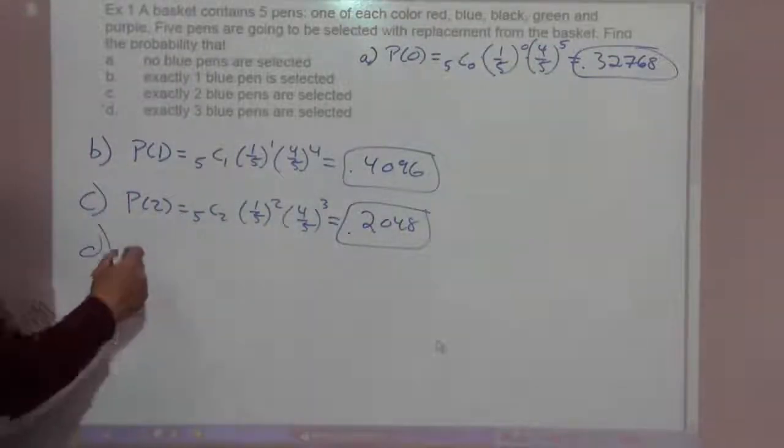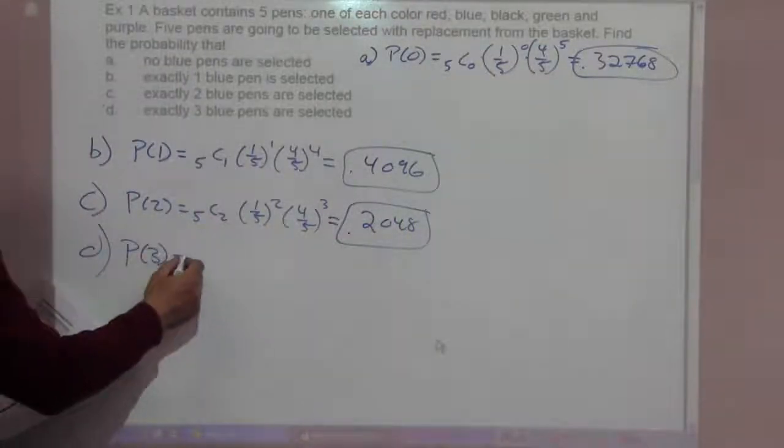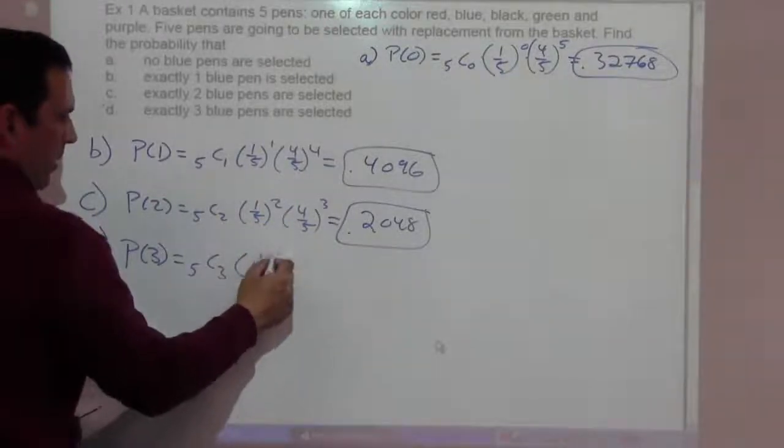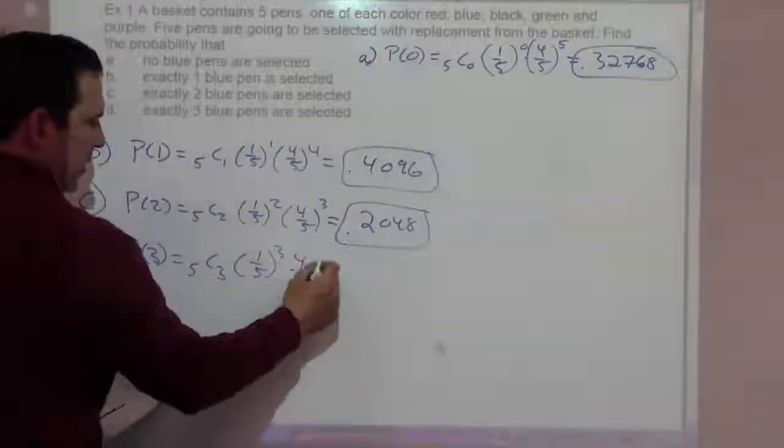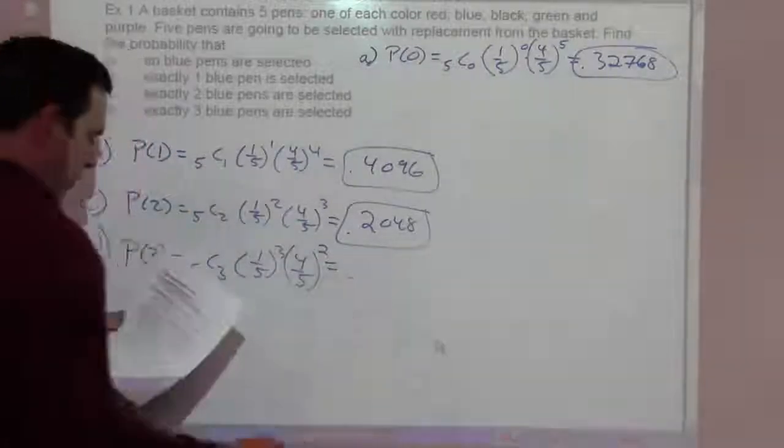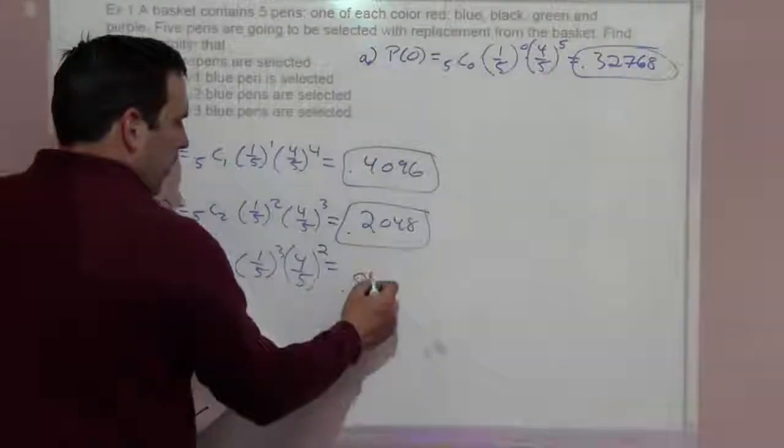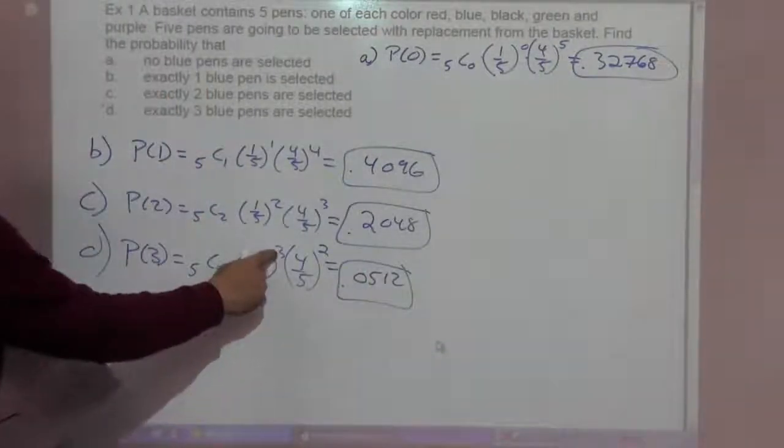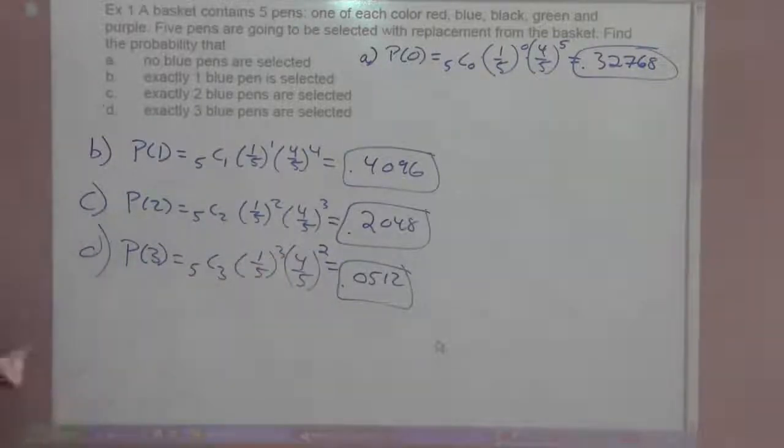And part D, the probability of getting exactly three pens is five choose three, one-fifth to the third, four-fifths to what power? Four-fifths to the two power, very good. That's .0512. So three successes, two failures, total of five. Feel free to pause that and go to the next page.